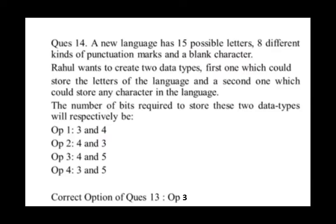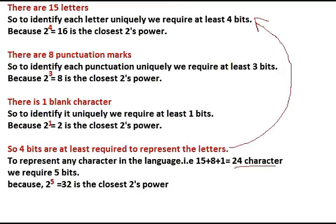In this problem, we need to calculate the size of two data types. Well, the first data type is used to store 15 letters, and the second data type is used to store all the letters combiningly. So as we can see in the first line, 15 letters can be represented uniquely using 4 bits, because 2 to the power 4 is 16, and so 4 bits is sufficient to represent 15 letters. Second case, we need to find the bits required to represent all the characters together. In total, there are 15 plus 8 plus 1 equals to 24 characters. And since 2 to the power 5 is equal to 32, which is closest to 24, we require 5 bits to represent it.